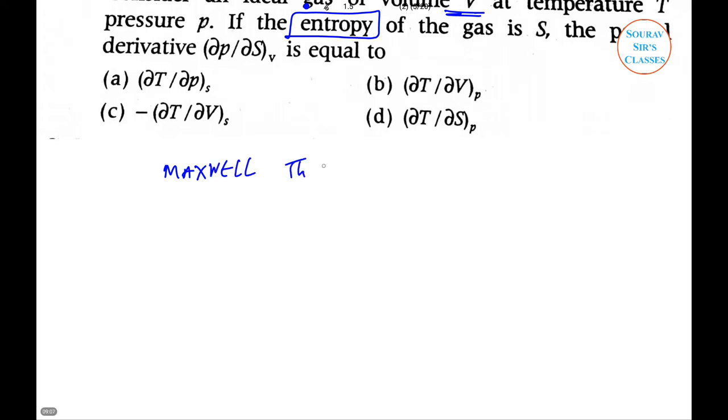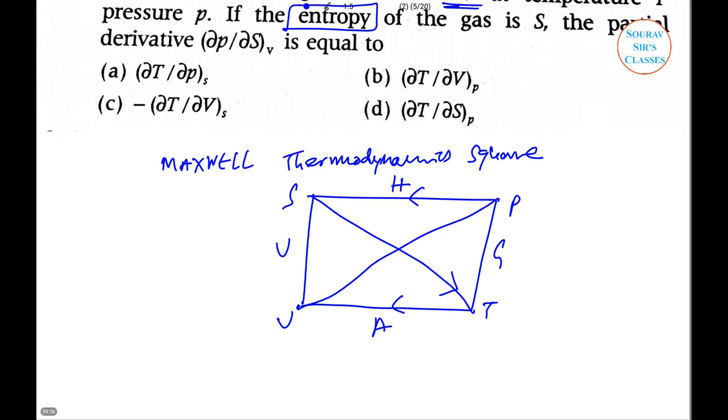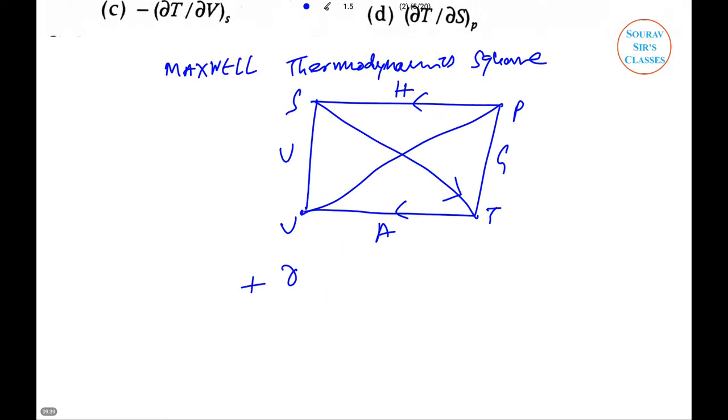From the Maxwell thermodynamic square, we can write that (∂P/∂S)_V equals negative (∂T/∂V)_S. Here we can see that option C is correct.